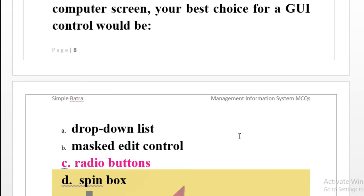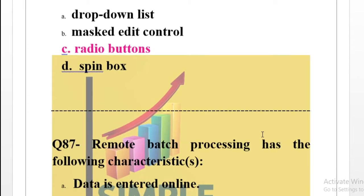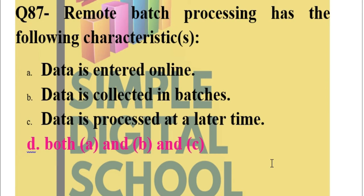Question number 87: Remote batch processing has the following characteristics. Options: data is entered online, data is collected in batches, data is processed at a later time, or both a, b, and c.